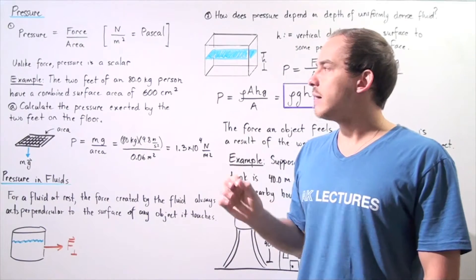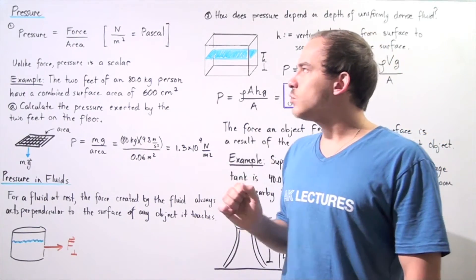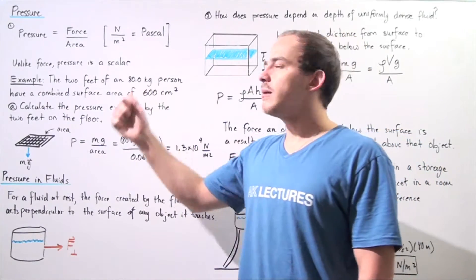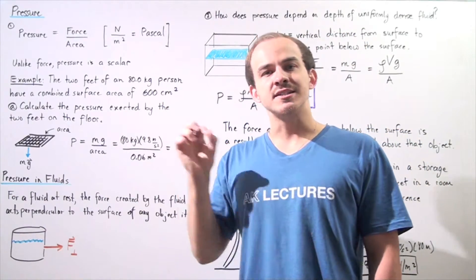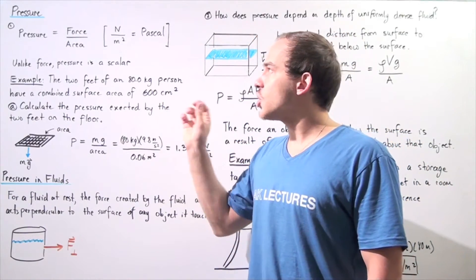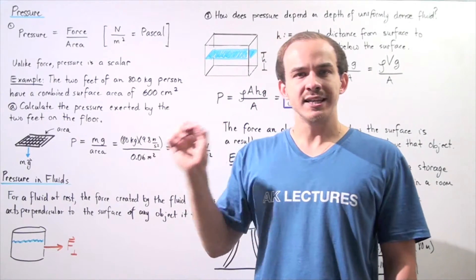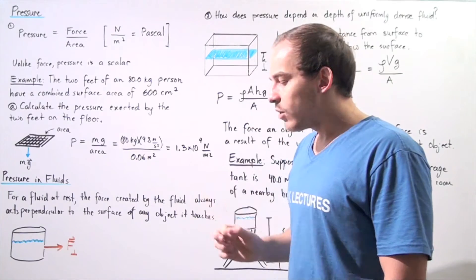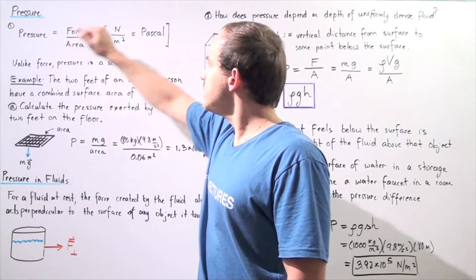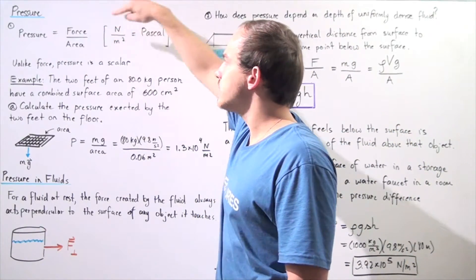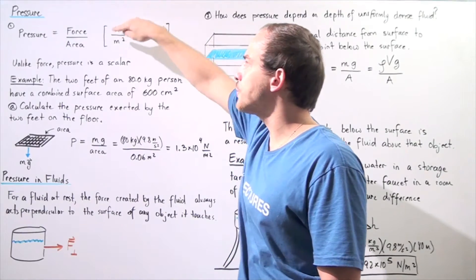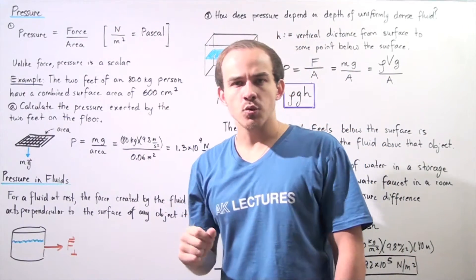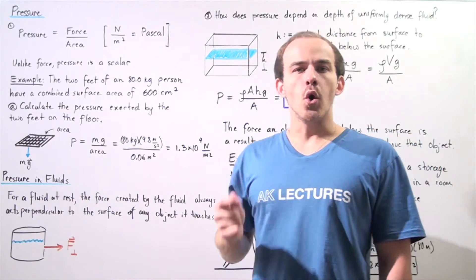The pressure an object feels is equal to the force that object feels per some given area that we're considering. The force always acts at a perpendicular angle with respect to the area. Because of this formula, we see that our units of pressure are newtons per meter squared, where one newton per meter squared is equivalent to one pascal.